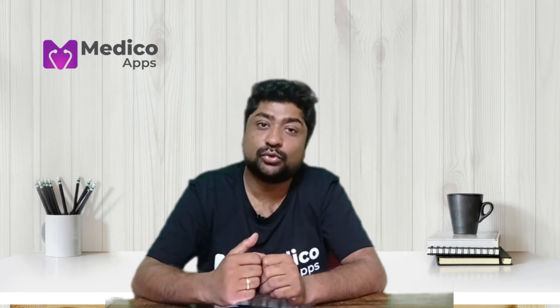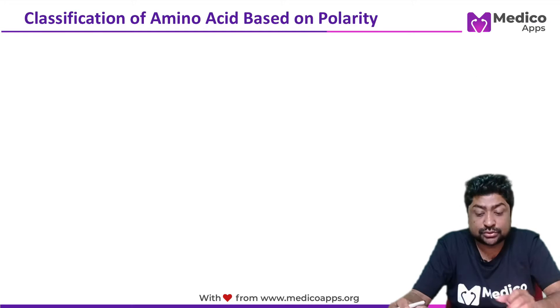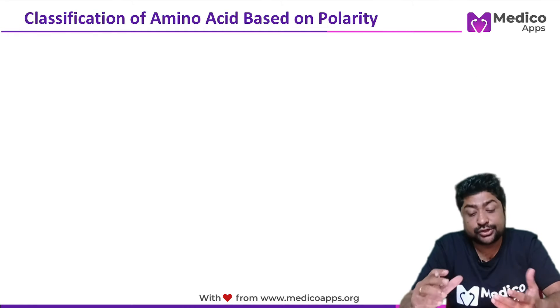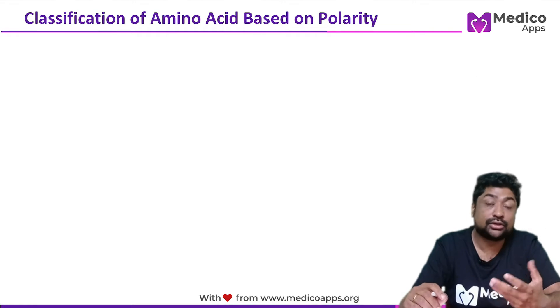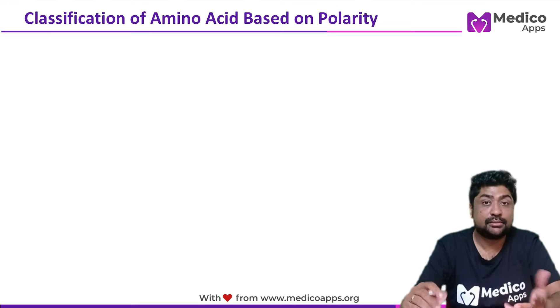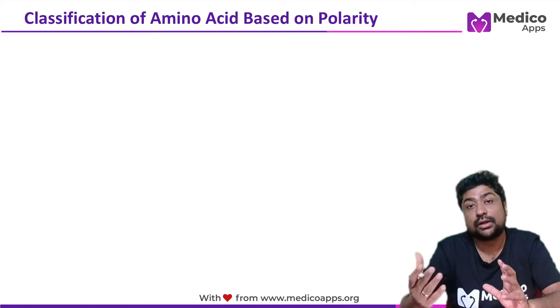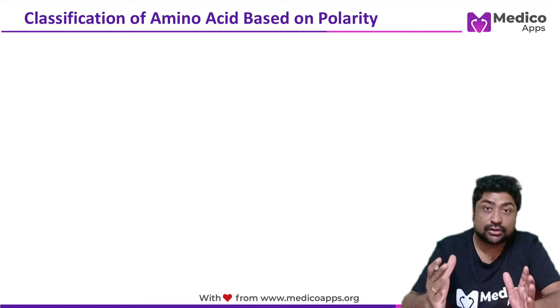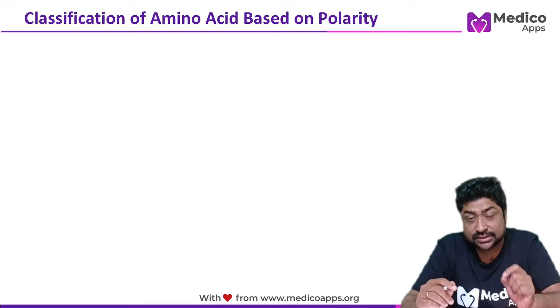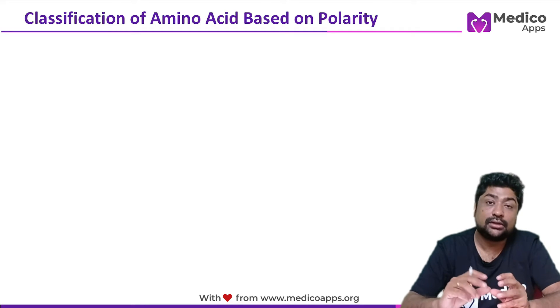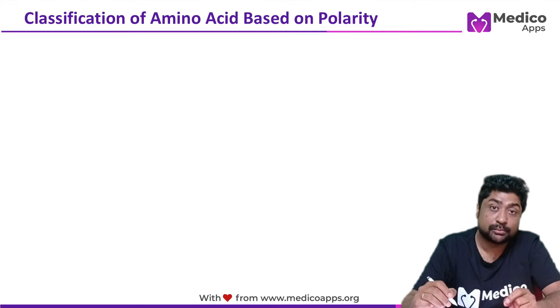This question is basically asking you to identify the polarity or the charge of an amino acid, because that will help determine its contribution to the overall positive or negative charge of the protein. To answer this, you need to learn about the classification of amino acids based on their polarity — this is a very important topic and questions are asked on it many times.